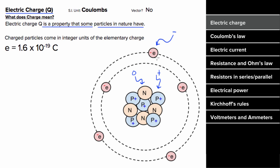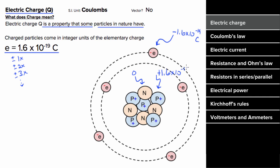It turns out that all fundamentally charged particles in the universe have charges that come in integer units of the elementary charge. So if you find a particle in nature, it's gonna have a charge of one times this number, two times this number, three times this number, and it could be positive or negative. For instance, the electron has a charge of negative 1.6 times 10 to the negative 19 Coulombs, and the charge of the proton is positive 1.6 times 10 to the negative 19 Coulombs.